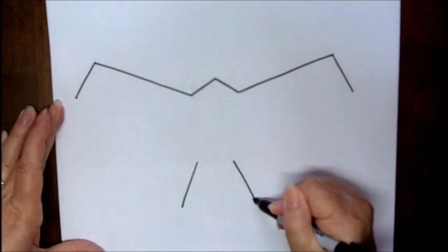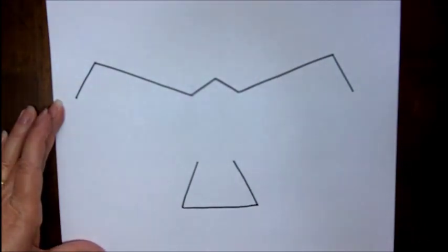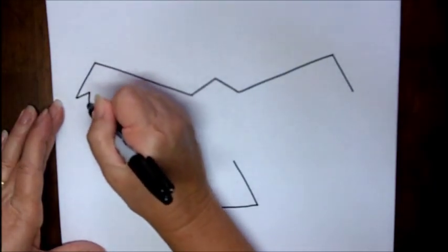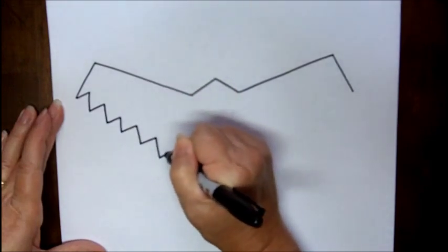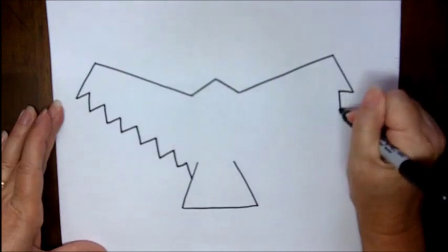And then connect those lines at the bottom, going back up to the wings. We're going to make a series of these going all the way down to the tail. And then on this side, let's do the same thing as well.